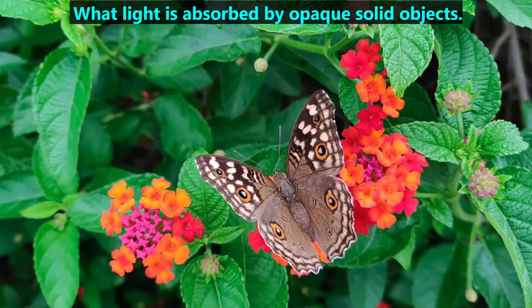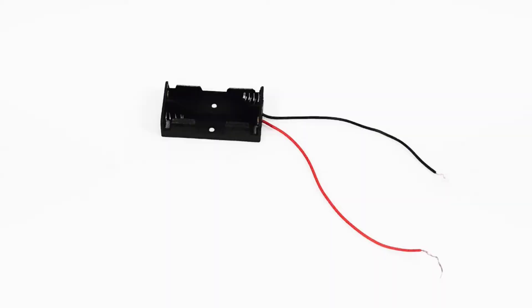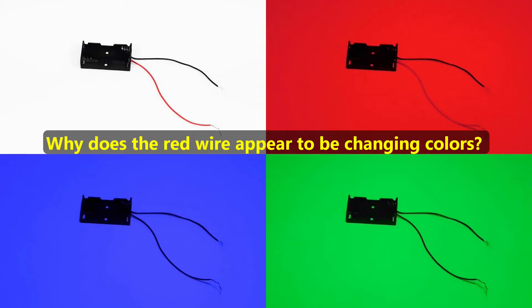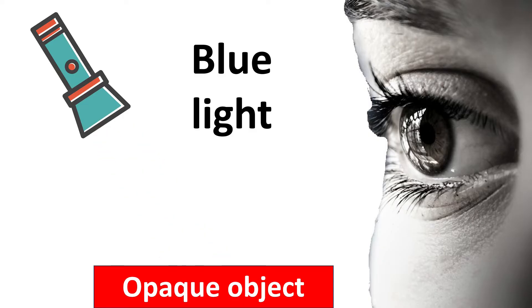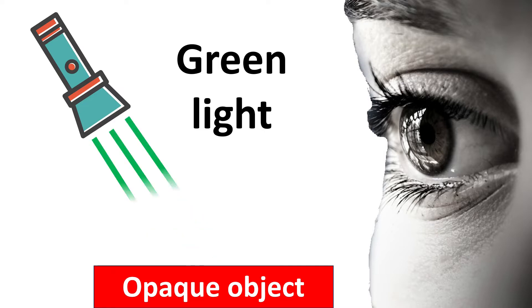We'll start by looking at what light is absorbed by opaque solid objects. This battery case has a black and red wire. When we shine a red light on it, the red wire looks red. Though when we shine a blue light or a green light on the case, then the red wire looks almost as black as the black wire. Why does the red wire appear to be changing colors? The reason is because red objects reflect red light well, so when we shine red light on them, we'll see red light that comes into our eyes. In contrast, red objects absorb other colors of light, including blue and green. So when we shine those colors on them, no light is reflected into our eyes, so they look black.